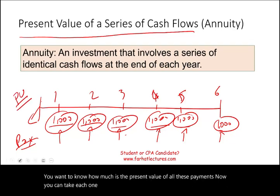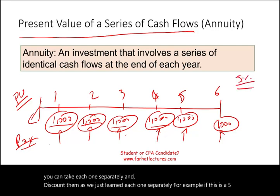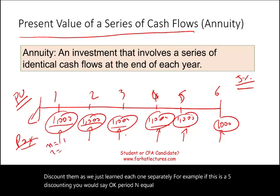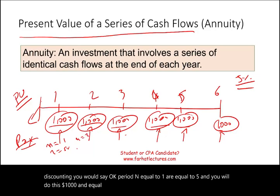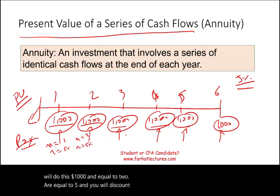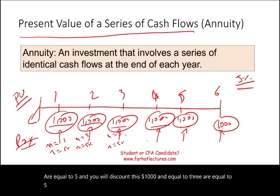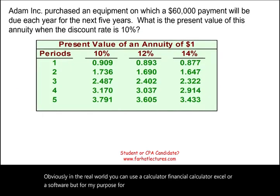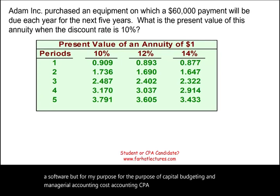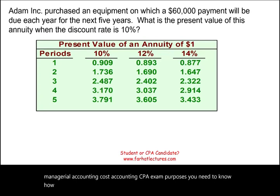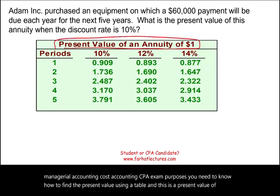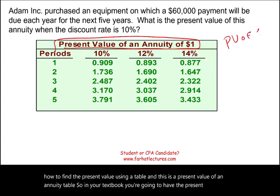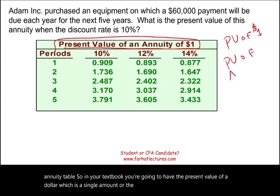You can take each $1,000 payment separately and discount it — n=1 at 5%, then n=2 at 5%, then n=3 at 5%, and so on. But this is really time consuming. In the real world you could use a financial calculator, Excel, or software. But for capital budgeting, managerial accounting, cost accounting, and CPA exam purposes, you need to know how to find the present value using a table. This is the present value of an annuity table — in your textbook you'll have both the present value of a single amount and the present value of an annuity.